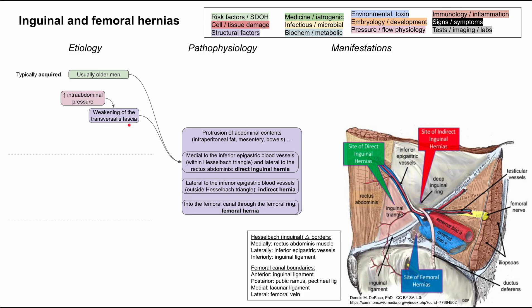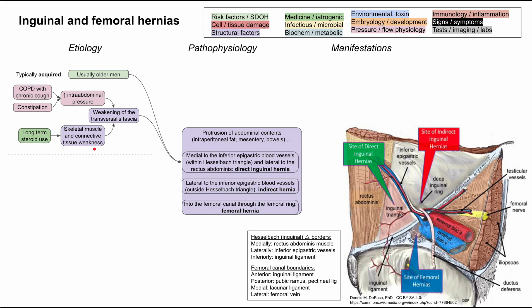The direct inguinal hernia is caused by a weakening of the transversalis fascia. This can happen for a couple of reasons. First, you can have increased intra-abdominal pressure, which can result from conditions like constipation or COPD with a chronic cough, where you're constantly increasing your intra-abdominal pressure. In addition, you can just have a structurally weaker transversalis fascia from weaker skeletal muscle and connective tissue, most commonly arising from long-term corticosteroid use.